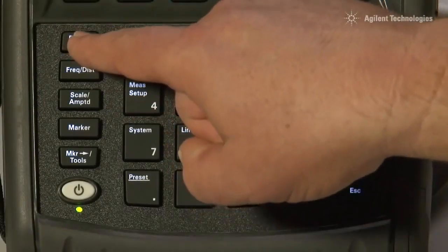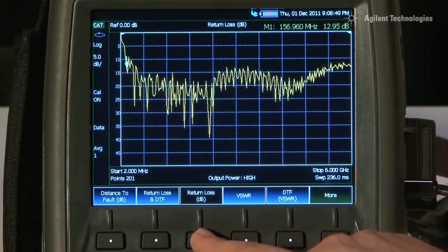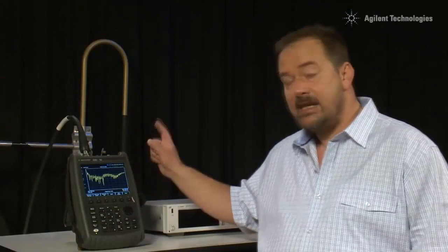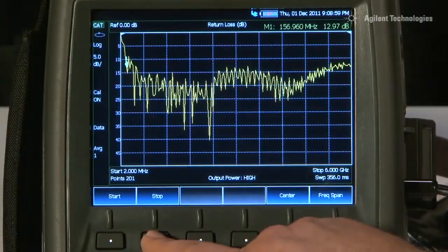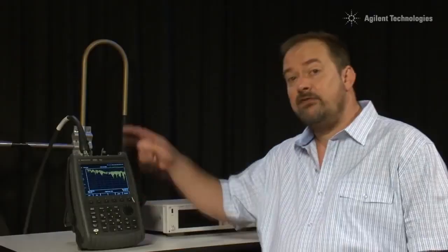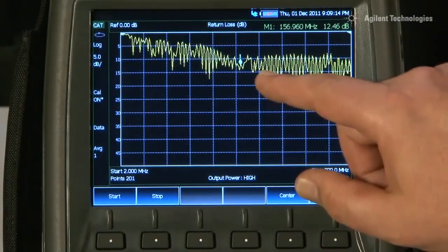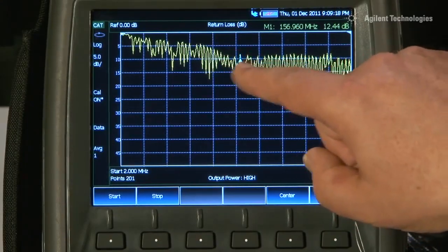I will press Mode and select CAT for cable and antenna test and return loss in dB, which is already selected. Now, this antenna we know is tuned to around 157 MHz in the VHF marine band. Let's press Frequency and set a stop of say 300 MHz. So the resonant frequency of the antenna should be somewhere in the middle of the screen. And you can see there is sort of a dip in the return loss there.